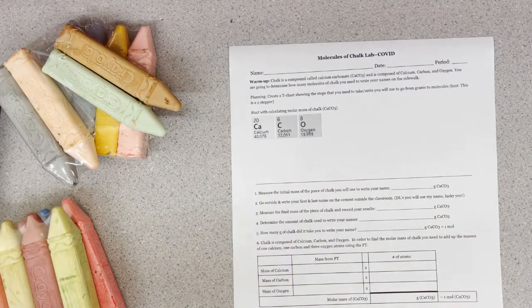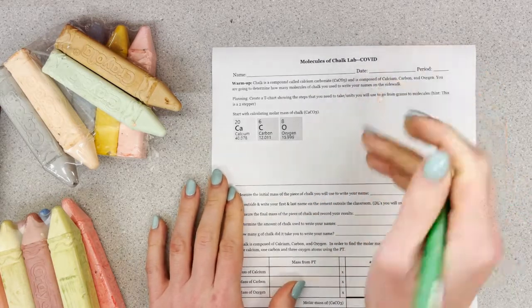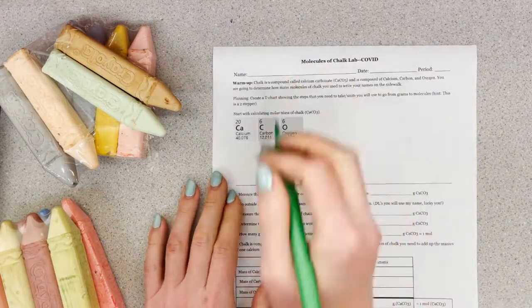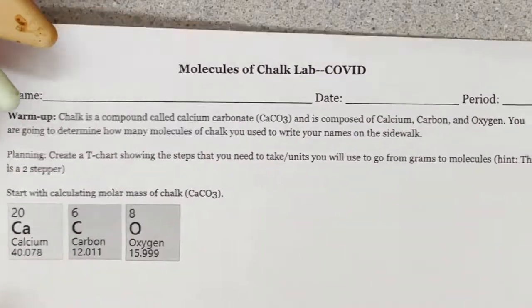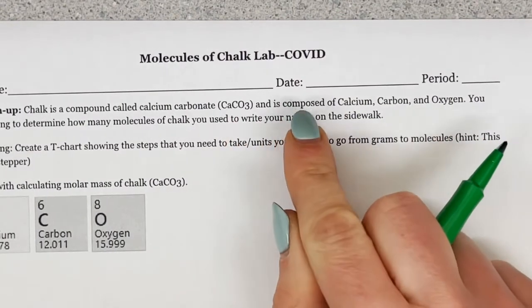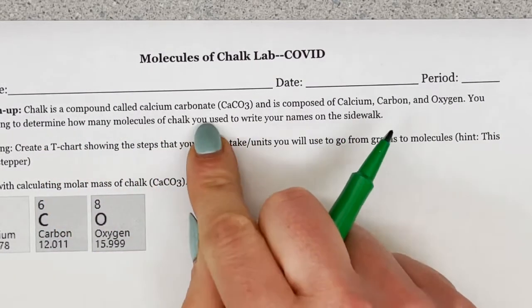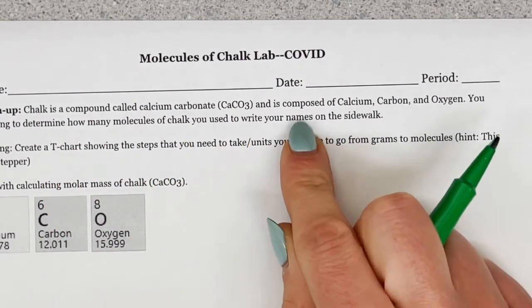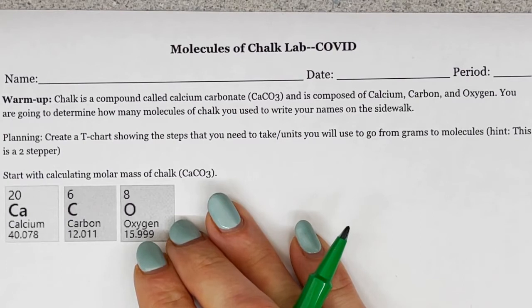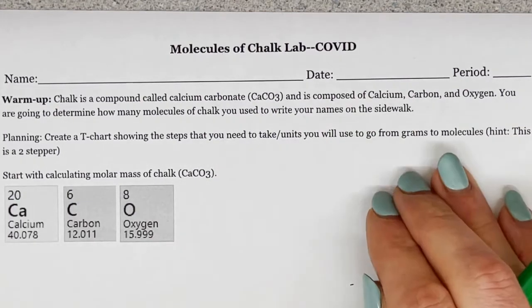Alright y'all, so today we're going to be doing one of my favorite labs. It's the Molecules of Chalk Lab, but it's designed for COVID, which just means that you are going to be using my data if you're a distance learner. So it says chalk is a compound called calcium carbonate and is composed of calcium, carbon, and oxygen. You're going to determine how many molecules of chalk you use to write your name, Ms. Moore's name, on the sidewalk.